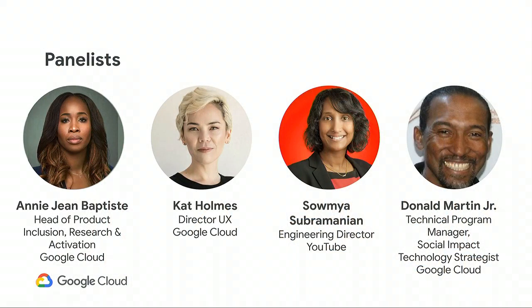We're going to jump into our panel. I'd love for our panelists to introduce themselves, tell us what brings them to this work and what excites them about it. My name is Kat Holmes. I am a UX director at Google, joined about eight months ago. I'm also the author of a book called Mismatch: How Inclusion Shapes Design. Prior to that, I worked at Microsoft, where I built the inclusive design practice over multiple years.